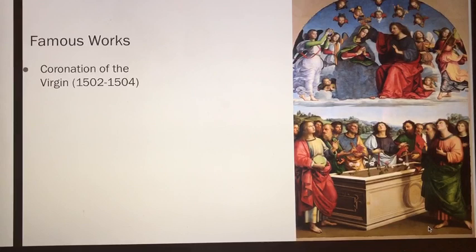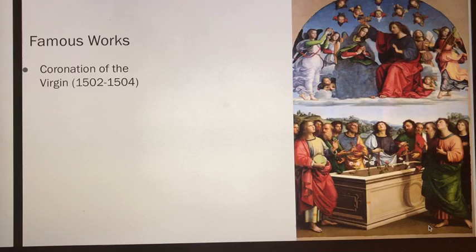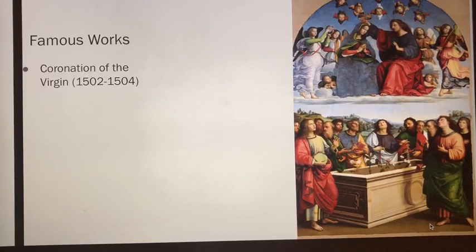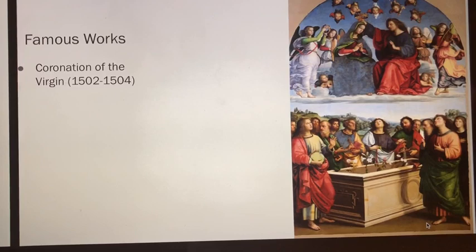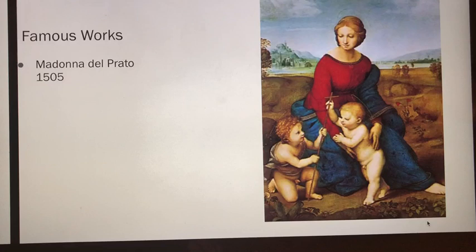In the upper part of the composition, among angel musicians, Christ crowns the Virgin, while in the lower part, the apostles — among whom Saint Thomas, with the girdle which he has received as a gift from the Virgin — are arranged around the tomb.